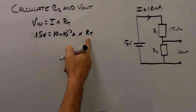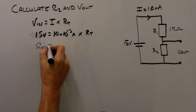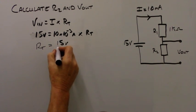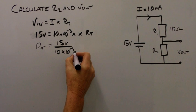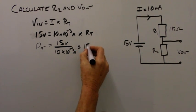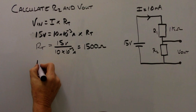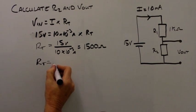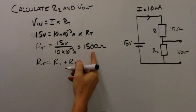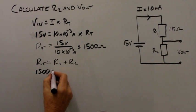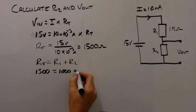Rearranging to make Rt the subject of the equation, Rt equals 15 volts divided by 10 times 10 to the minus 3 amps, and this equals 1500 ohms. We know that Rt, the total resistance in a series circuit, is equal to R1 plus R2. So Rt, which is 1500 ohms, equals R1, which is 1000 ohms, plus R2.